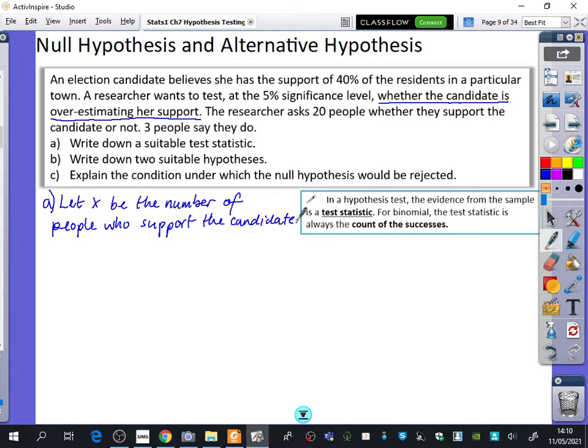The researcher is asking these 20 people who are going to become the test statistic, because if they support them, then they will be included. Then it wants us to write down two suitable hypotheses. This is going to sound really silly, but the way you write down a hypothesis test is you say capital H with a small zero, and then you do a colon. If you do equals, it's wrong. If you do a dash, it's wrong. You do H naught colon. This is the thing where we're just assuming that what they have told us is true. So what should the probability be, given the information they've told us in this question?